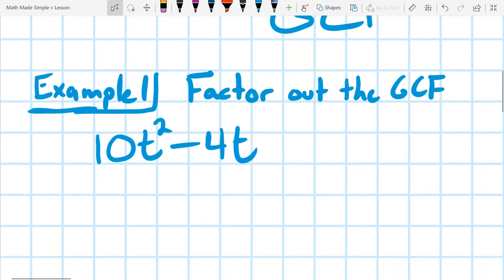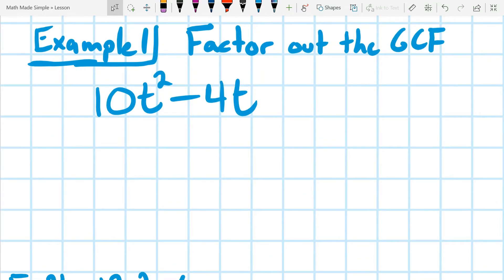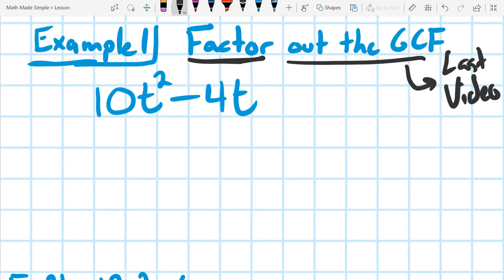So for starters, we're going to jump right in and take a look at this example. It says factor out the GCF. Now remember, the GCF means greatest common factor. Now we've looked at that before, so if you haven't, I would check out the last video, which is on the GCF.